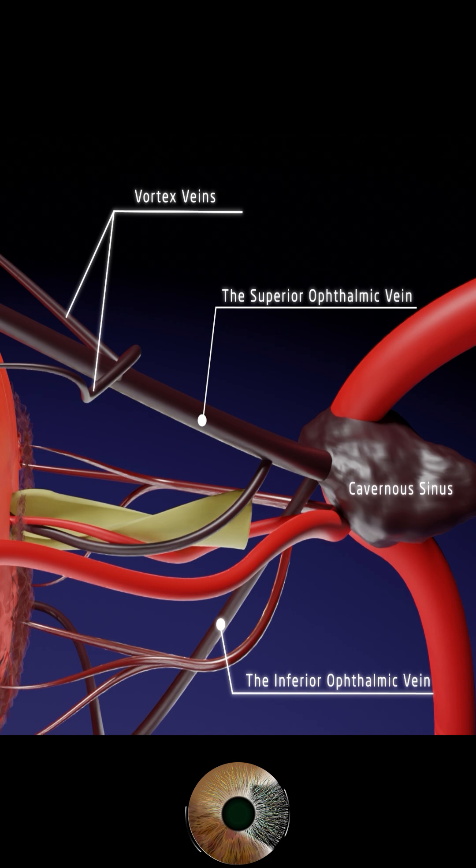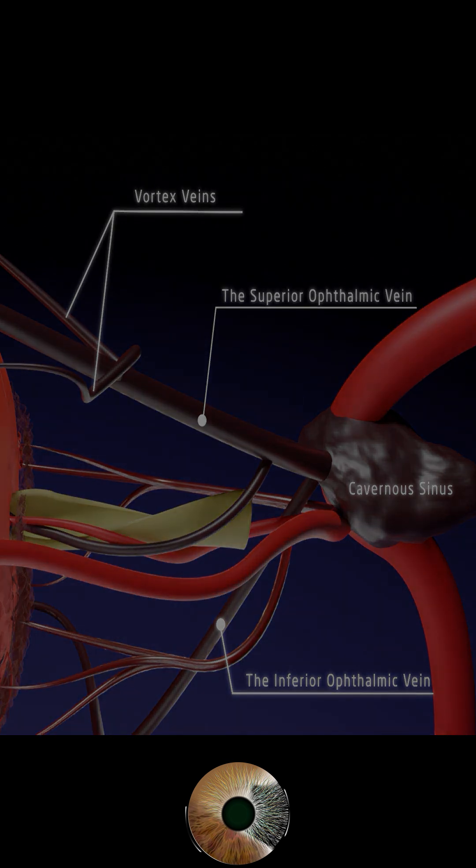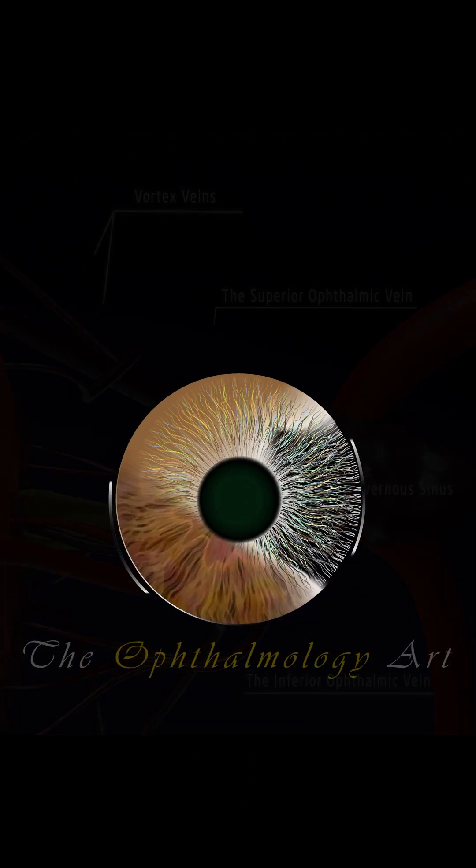Importantly, these veins are valveless, allowing retrograde flow, which is why infections from the face or orbit can potentially spread to the brain through the cavernous sinus.